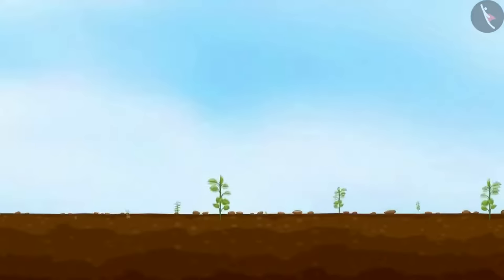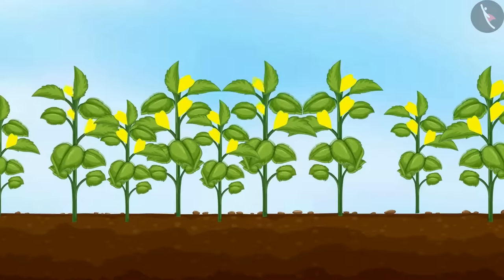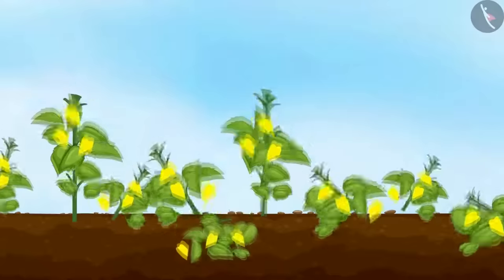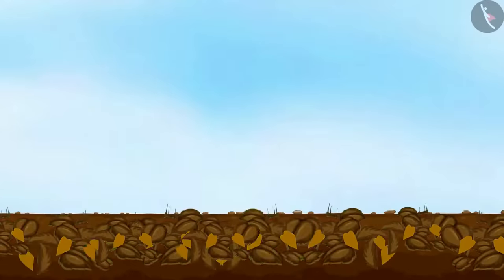Before sowing the seeds of the crop, some plants like sun hemp or guar are grown and then buried in the soil and mulched. These green plants thus turn into green manure which helps to enrich the soil.